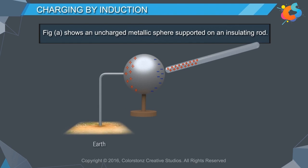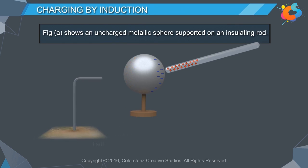the free electrons from the earth transfer into the sphere and neutralize all the positive charges. When the conductor is removed, the negative charge remains in the sphere, making it a negatively charged object.